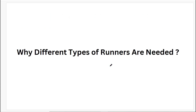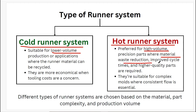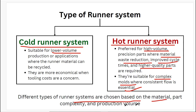Both runner systems are used in injection molding. Cold runner systems are used for low volume production of simple parts where tooling cost must be kept low. Hot runner systems are used for high volume production where no material wastage is desired, shorter cycle time is required, and higher part quality is needed — they are suitable for complex molds where consistent flow is essential. The choice of runner system is based on the type of material, part complexity, and production volume.